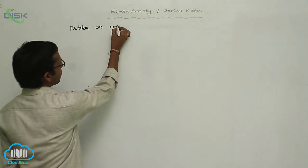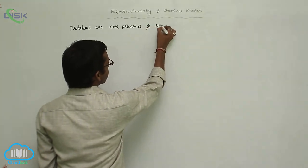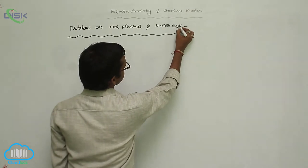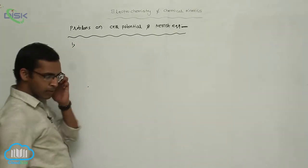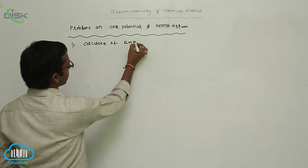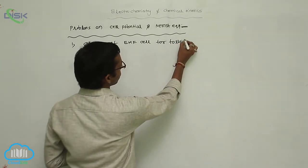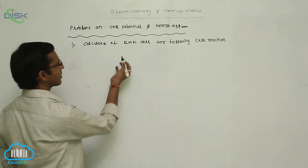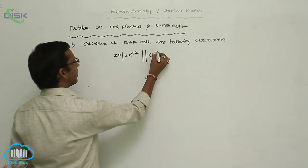Problems on cell potential and Nernst equation. We will calculate the EMF of a cell for following cell reactions, starting with a Daniel cell or galvanic cell reaction.